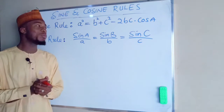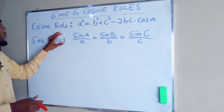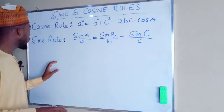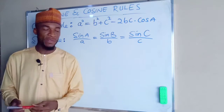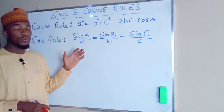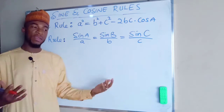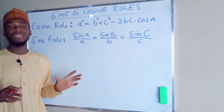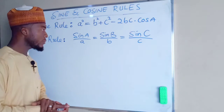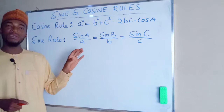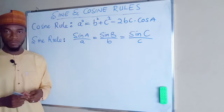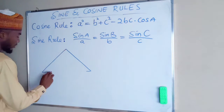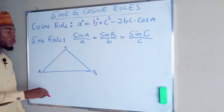A friend of mine on Facebook asked me to prove the cosine rule formula, but I want to use this opportunity to also prove the sine rule on the same two-dimensional figure. These two formulas are used to find the side lengths or angles of a triangle — most importantly, the irregular triangle.